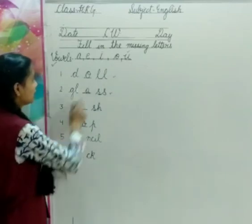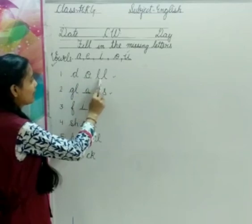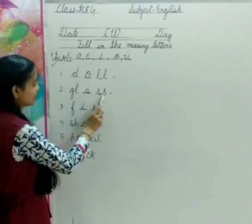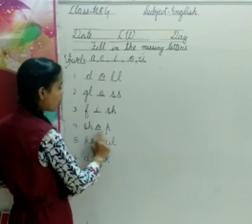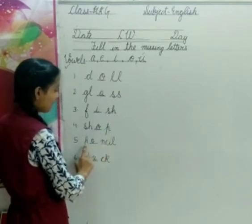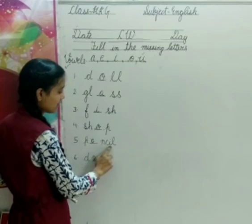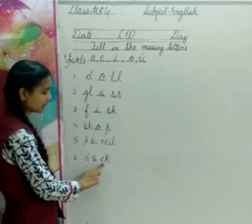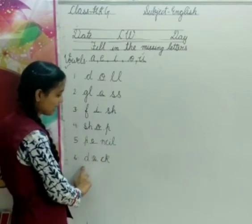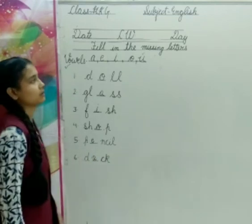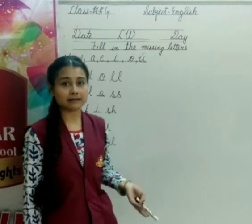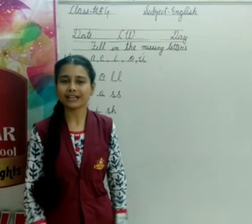Dekho, yeh yahan pe humne vowels ki help se saare words ko complete kiya. That is, first is D-O-double L, doll. G-L-A-double S, glass. F-I-S-H, fish. S-H-O-P, shop. P-E-N-C-I-L, pencil. And D-U-C-K, U is missing, and that is, new word is duck. Okay? Now students, you have to keep practicing both topics at your home. Thank you.